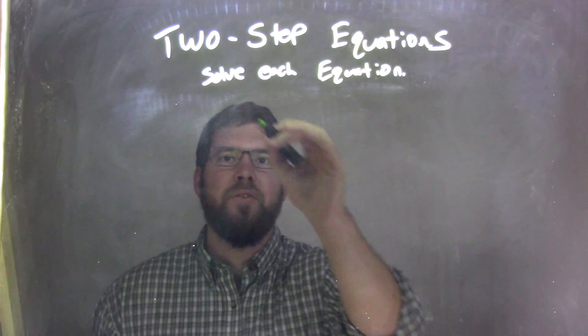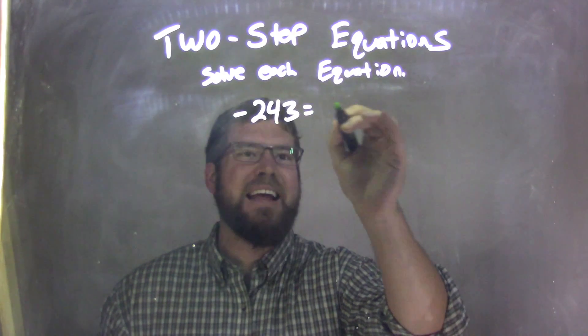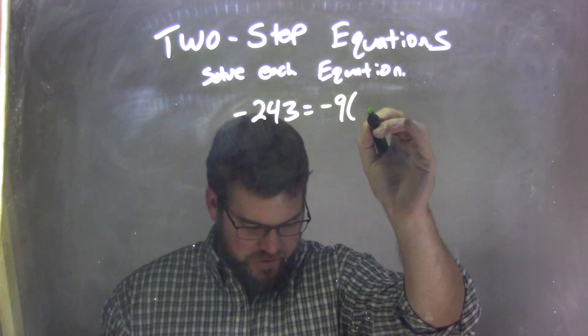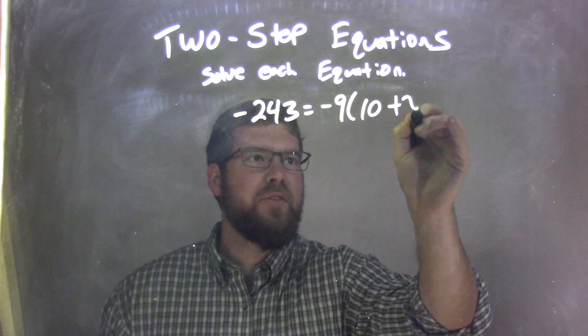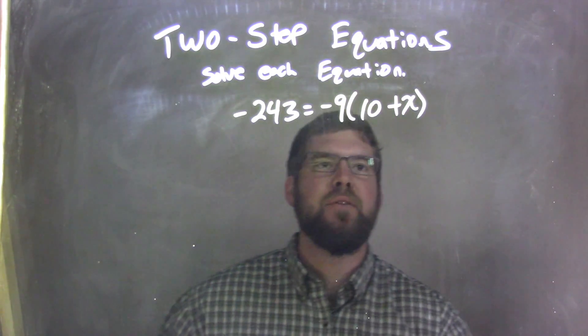So if I was given this equation, negative 243 equals negative 9 times 10 plus x. So negative 243 equals negative 9 times 10 plus x.